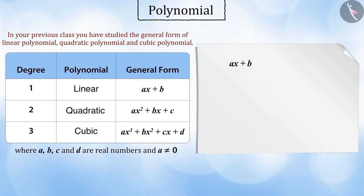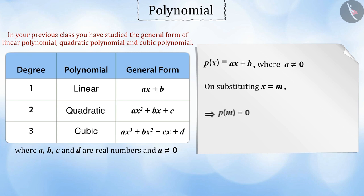Consider a linear polynomial p of x equal to ax plus b. Here, on substituting x with any real number m, if the value of the polynomial becomes equal to zero, then m is called the zero of the polynomial p of x.